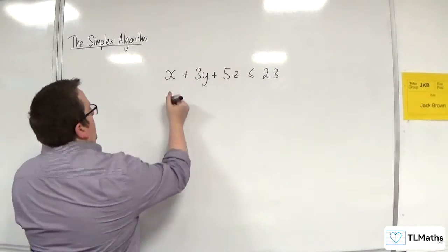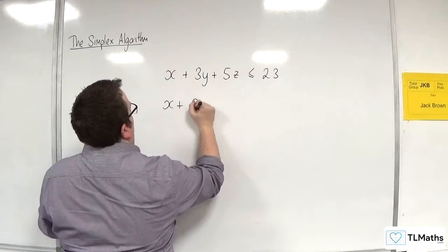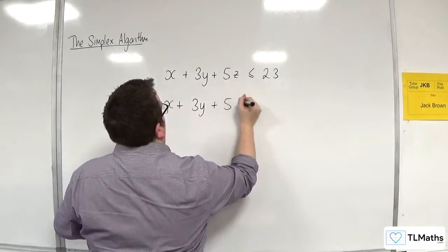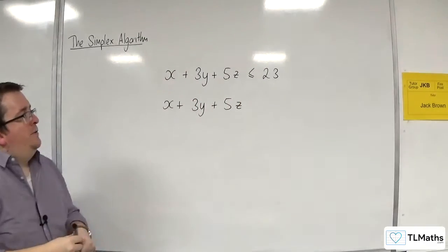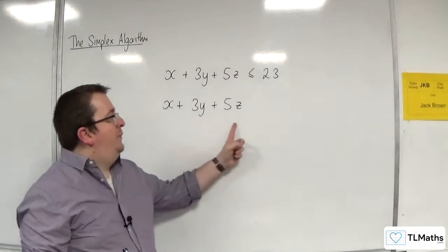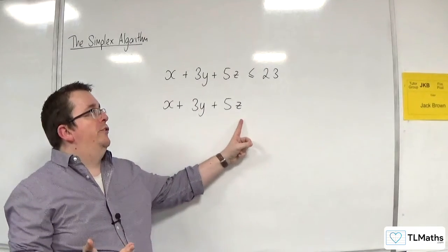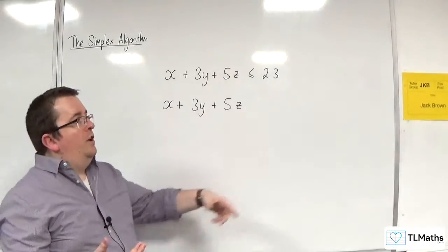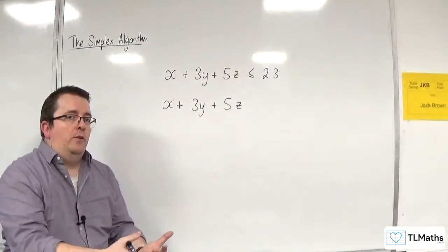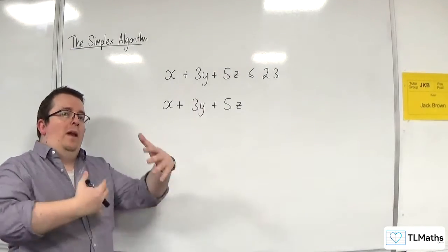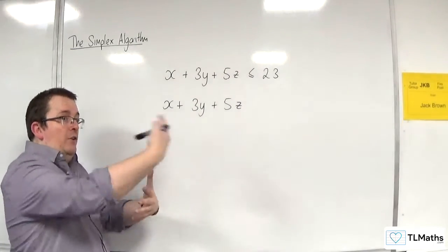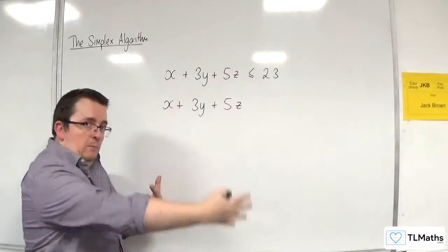The x plus 3y plus 5z stays as it is. And because that's going to be less than or equal to 23, what I'm going to do is add on a quantity that will add on enough to get me up to 23.